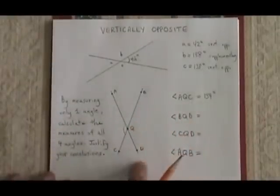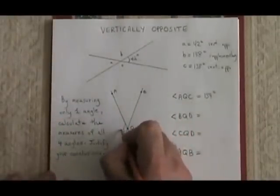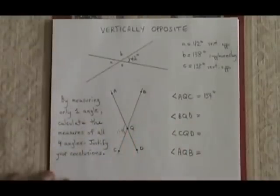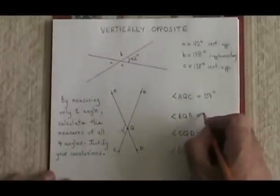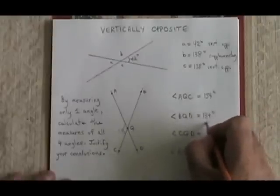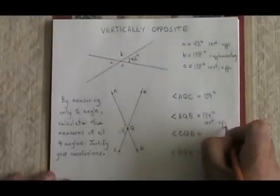Angle BQD, though, is vertically opposite to angle AQC. So therefore, angle BQD must also be 134 degrees. To justify, I use vertically opposite. That's the rule I applied.